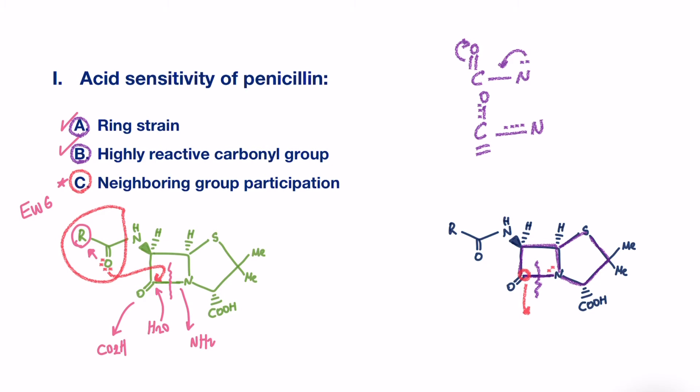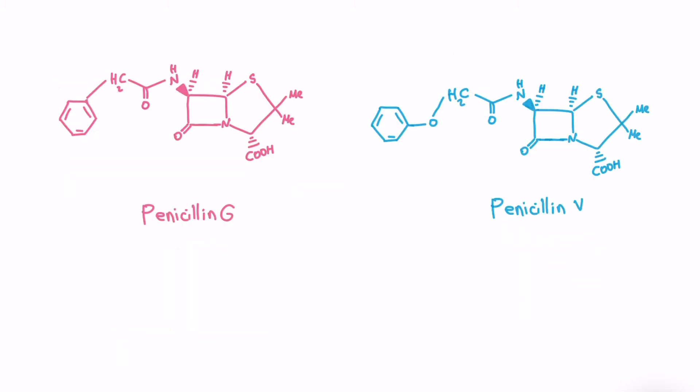This explains why penicillin G can't be given orally, while penicillin V can be. The structure of these two drugs are shown here. You can see in penicillin V, it has the electron-withdrawing group in the R that could draw electrons from the oxygen, thus preventing it from attacking the carbonyl in the beta-lactam.